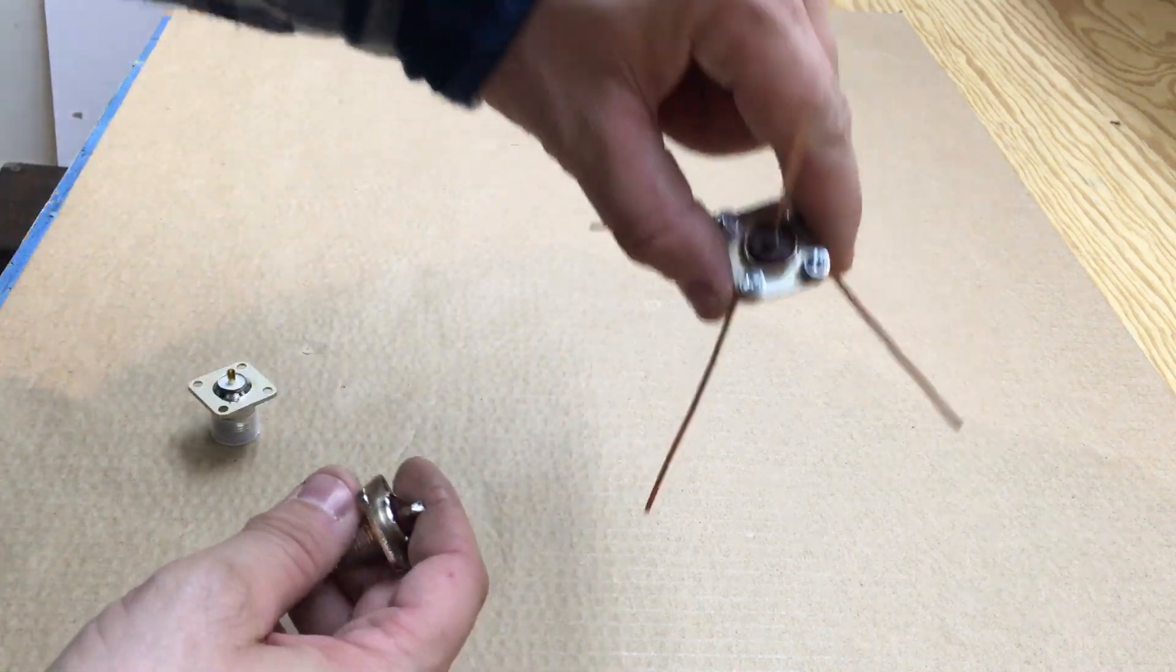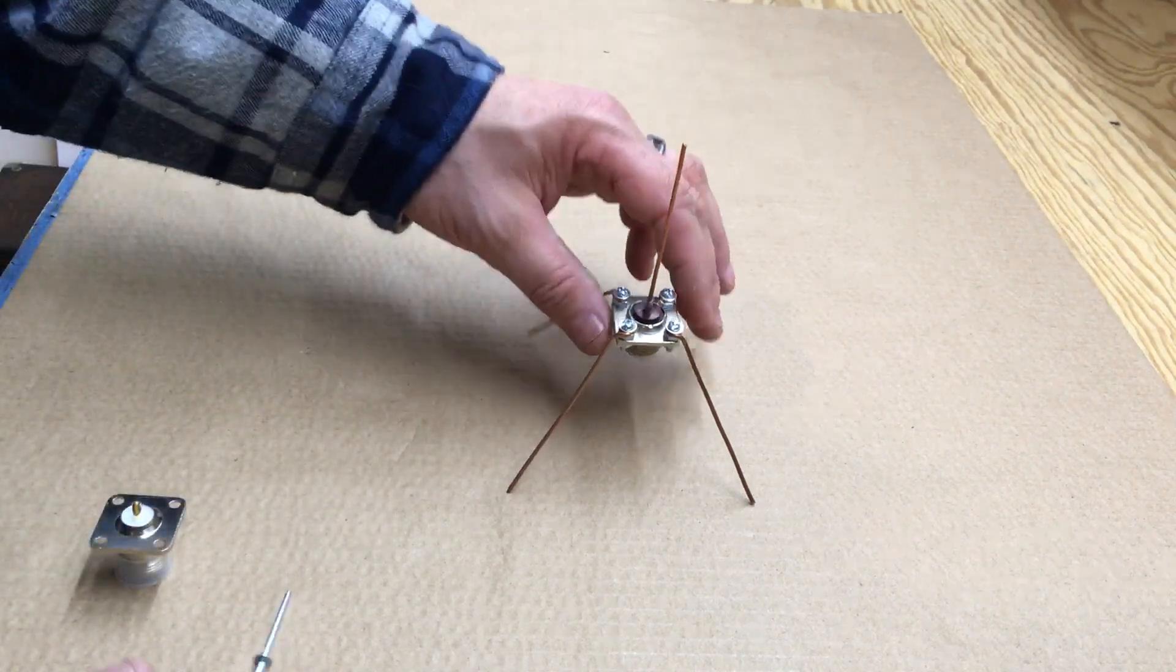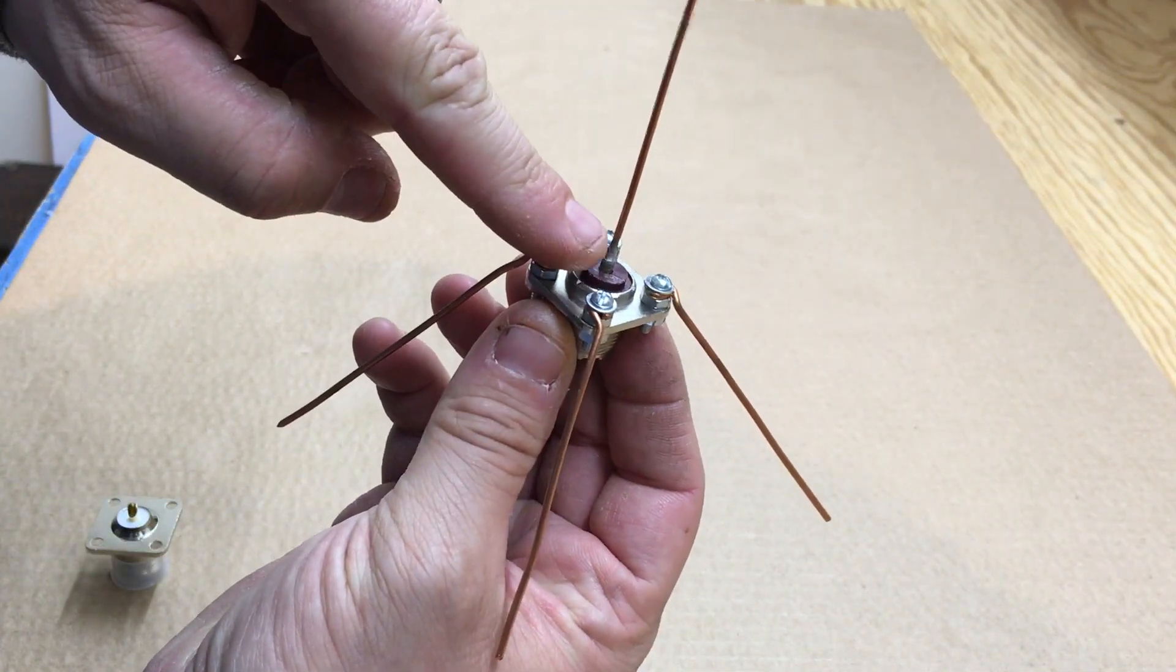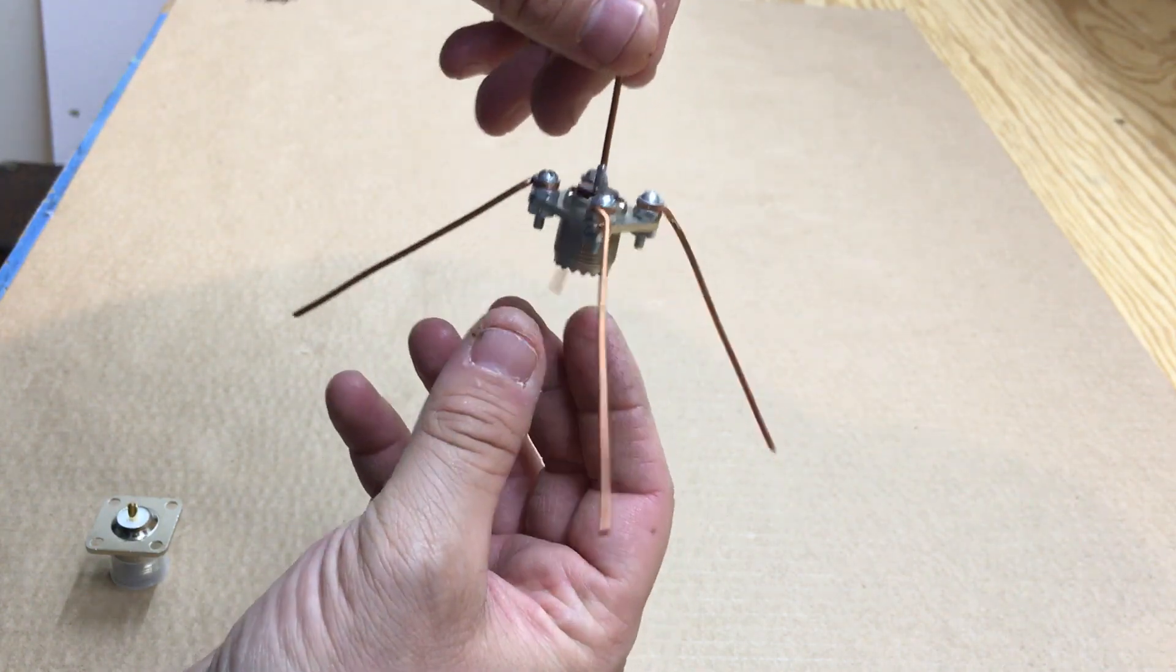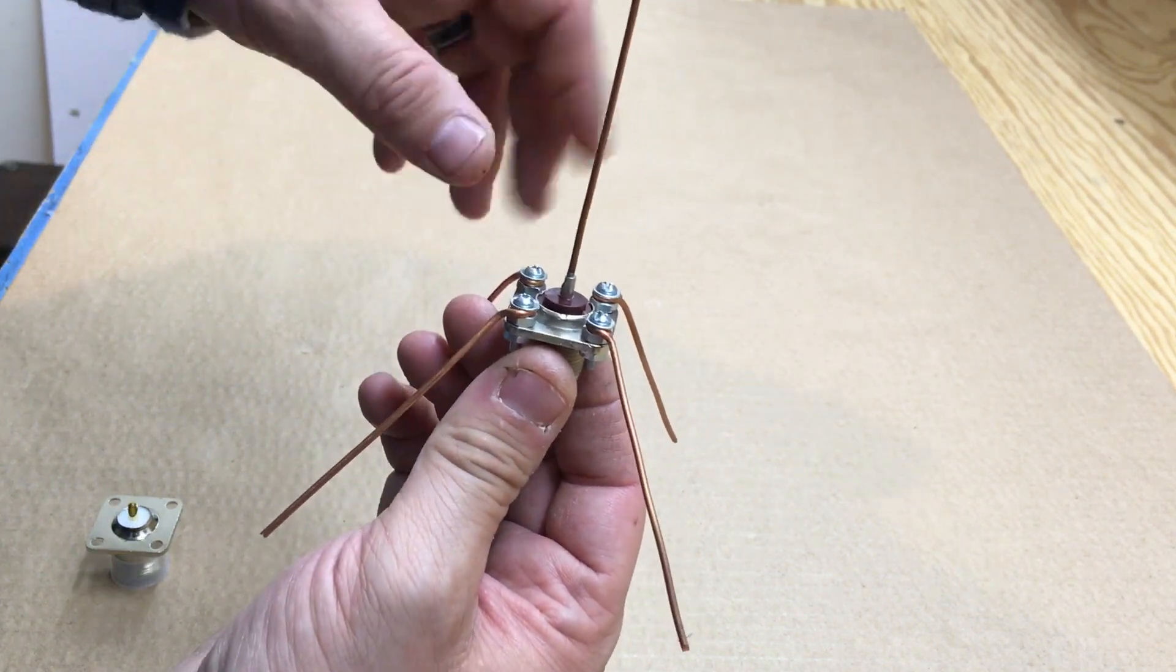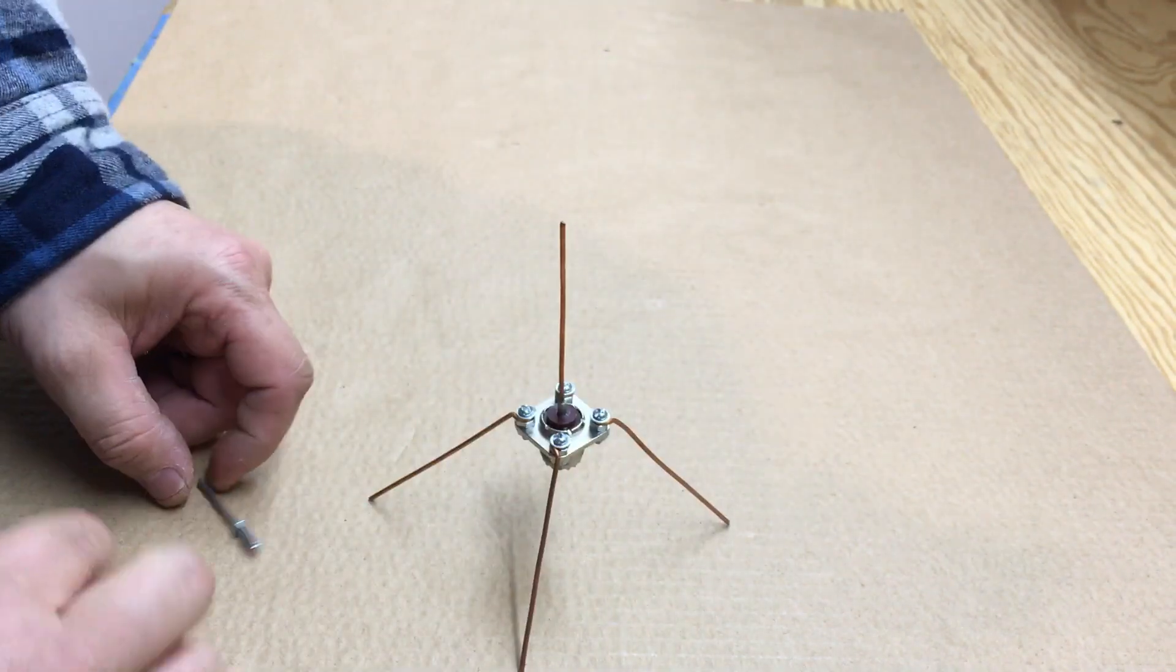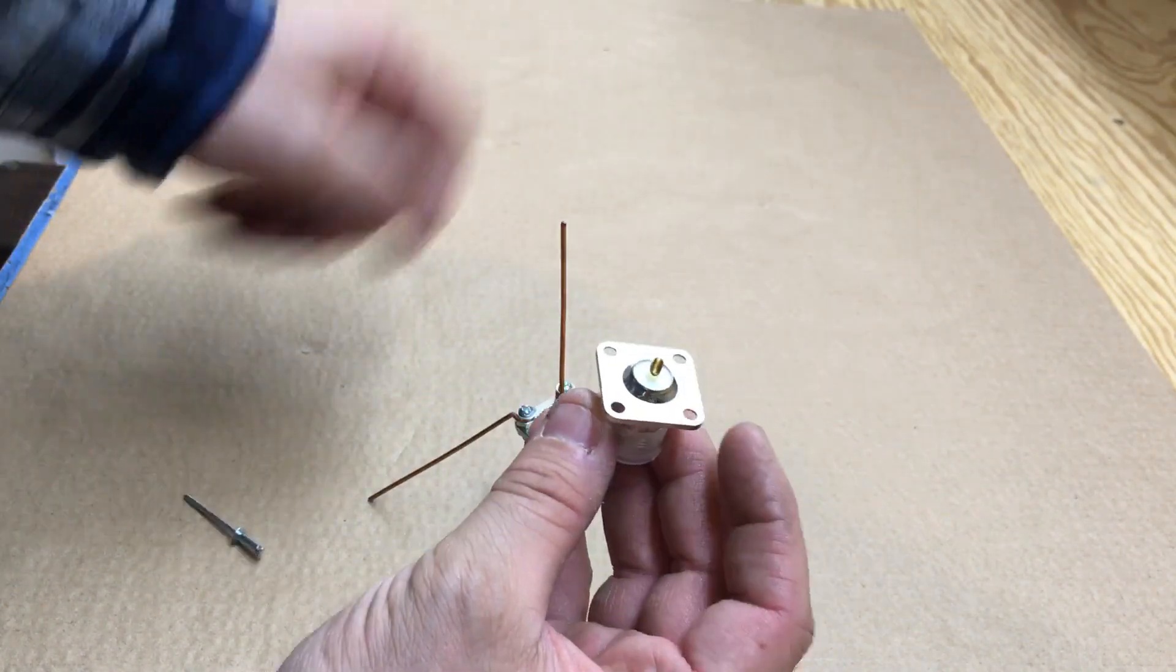But if you have whatever you have on hand, it'll work. Now there's a couple ways you can make these. Obviously you're going to have to solder a wire into the hole there, but for the radials there's several options. I use screws. I have used pop rivets before, or you can solder them right to it. But you got to watch you don't get that too hot or you start melting your plastic.